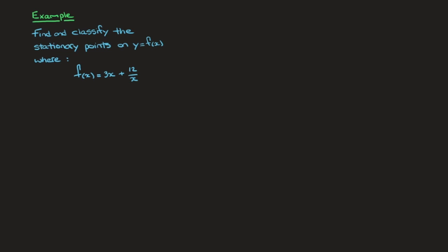The first thing we need to do is find the stationary points. To do that, we start by solving the equation f'(x) = 0. Solving this gives us the x-coordinates of the stationary points. Since this equation involves the derivative f'(x), we need to differentiate the function. f'(x) is equal to the derivative of 3x, which is 3, plus the derivative of 12/x, which is −12/x². So the derivative is f'(x) = 3 − 12/x².